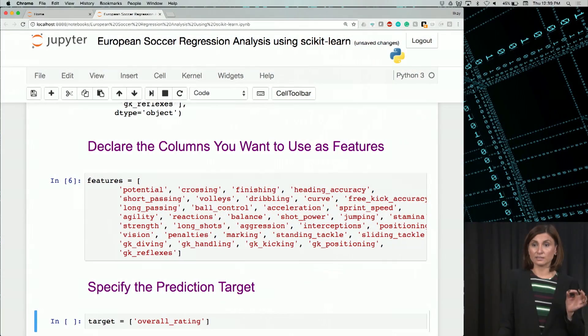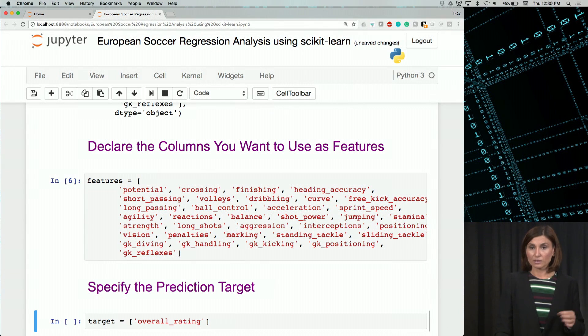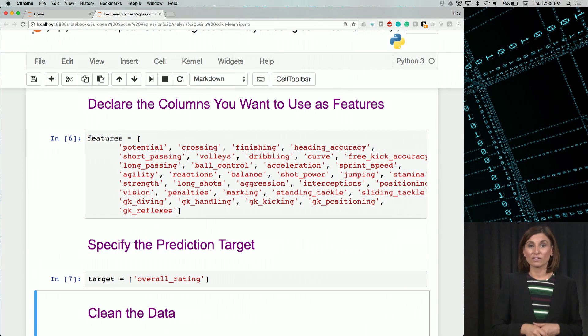So let's do these declarations of the columns. And target will be named overall rating. Let's now start cleaning the data. We'll simply drop the null values.